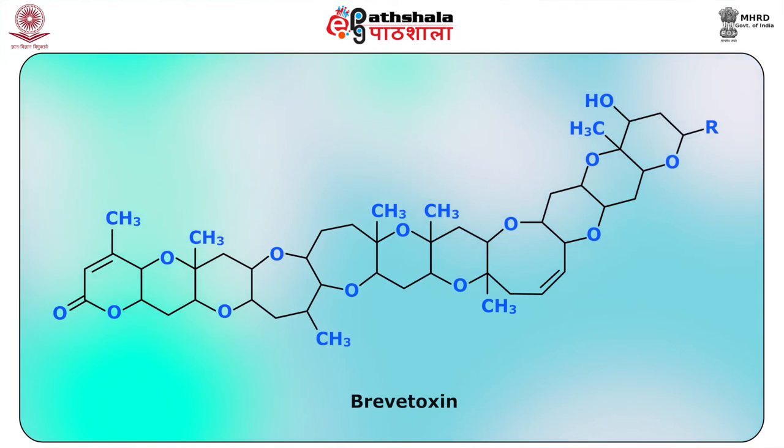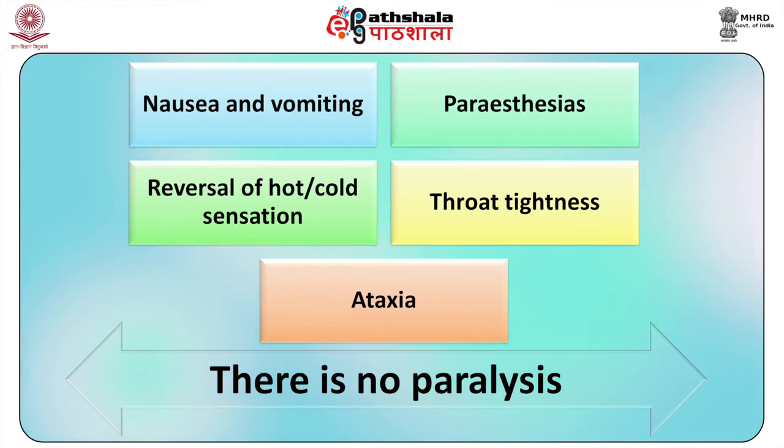Neurotoxic shellfish poisoning (NSP) is caused by a toxin produced by the red tide dinoflagellate Gymnodinium breve. The active principle is the lipid-soluble polyether brevetoxin, one of the most potent neurotoxins known. In humans, ingestion of brevetoxin-contaminated shellfish can result in gastrointestinal effects with neurological symptoms. Within 3 hours, nausea and vomiting, paresthesias, reversal of hot or cold sensation, throat tightness and ataxia may occur. There is no paralysis, and there is complete recovery from these symptoms within 2 days without specific treatment. No human deaths have been reported with brevetoxin poisoning.